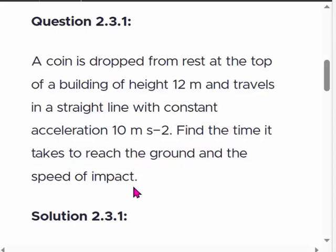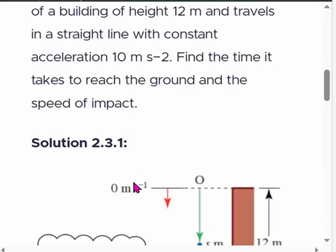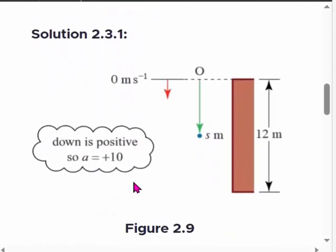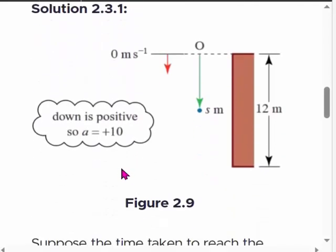Solution: Let's draw a simple figure. This is a picture of what's happening - a building 12 meters high. You drop a coin, it comes down. At the beginning there is no speed.